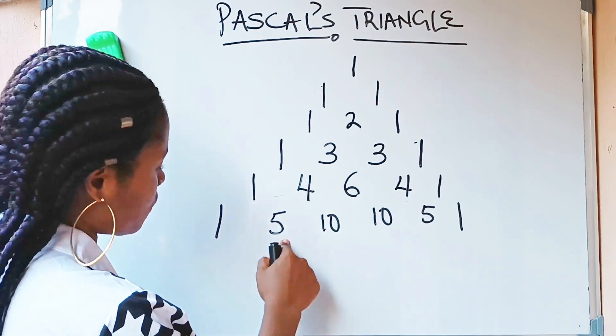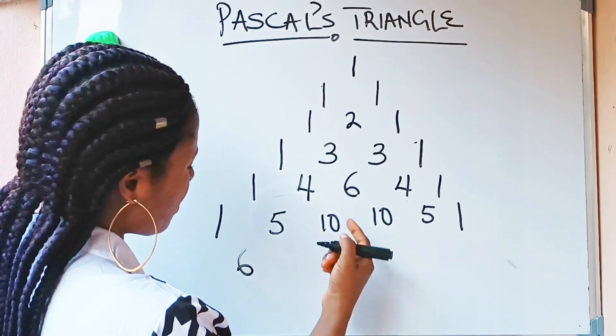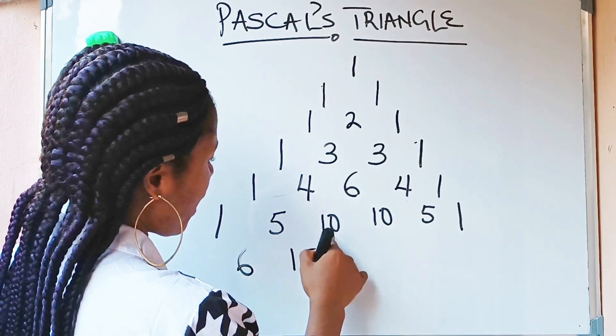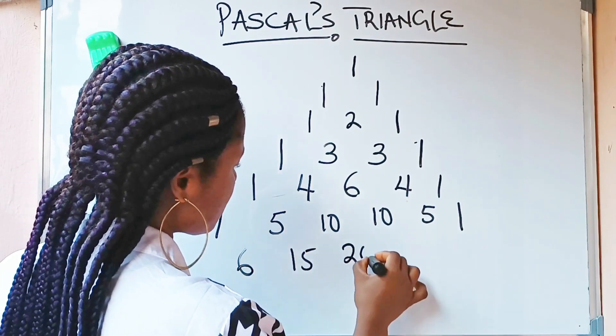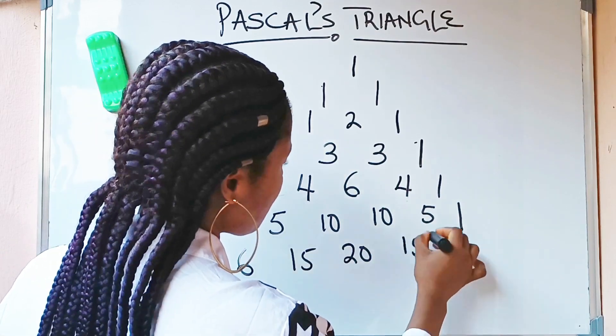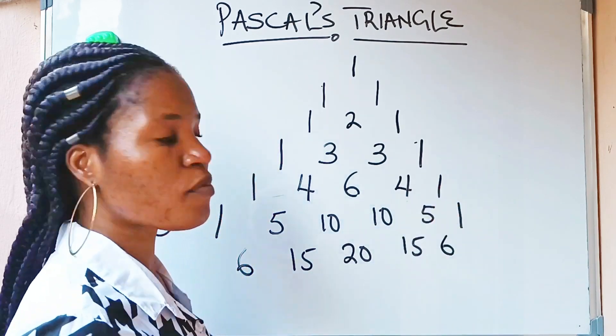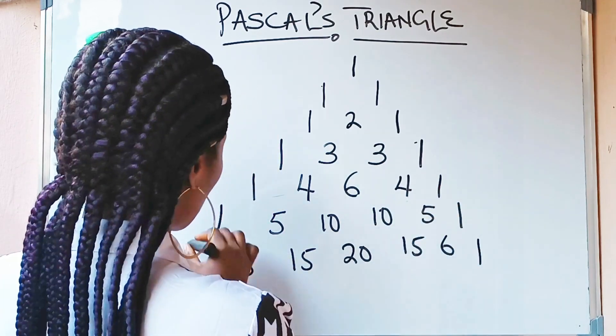So, I will continue now. 1 plus 5 gave me 6. 5 plus 10 gave me 15. 10 plus 10 gave me 20. 10 plus 5 gave me 15. 5 plus 1 gave me 6. I will now complete it with 1 and 1.